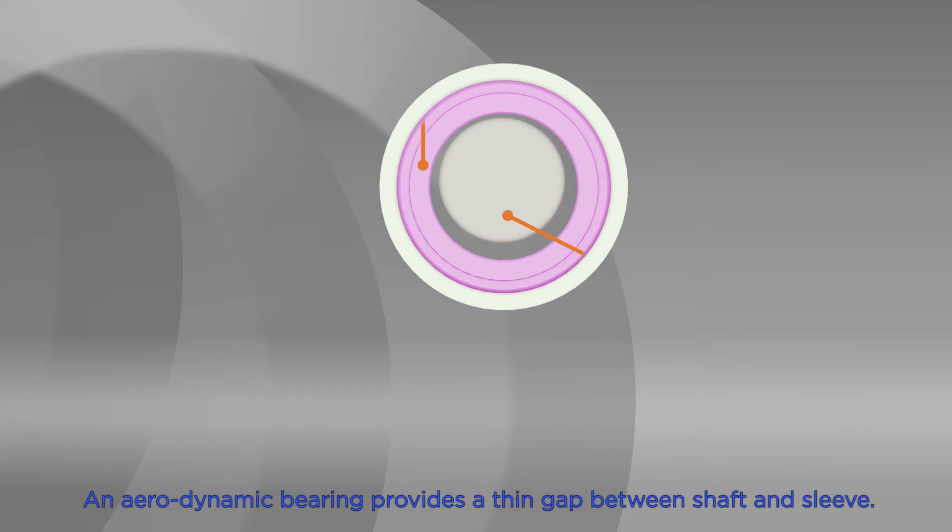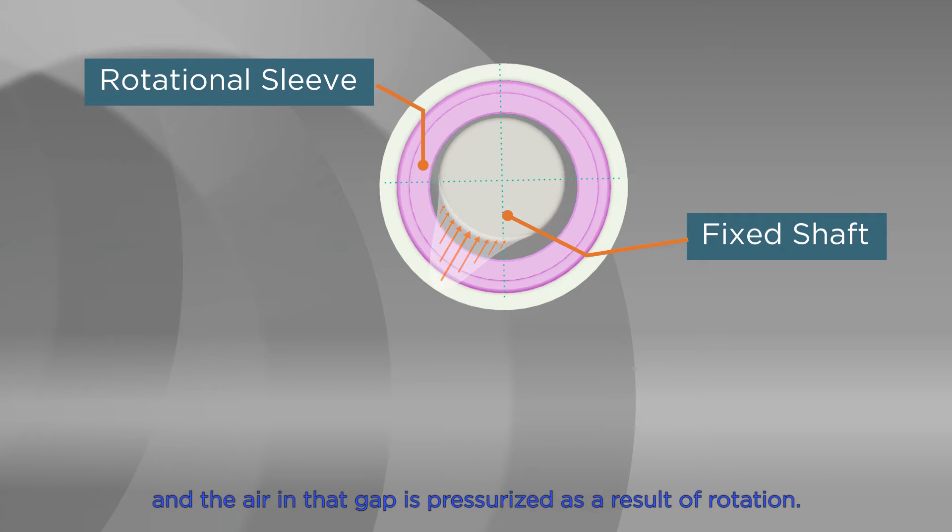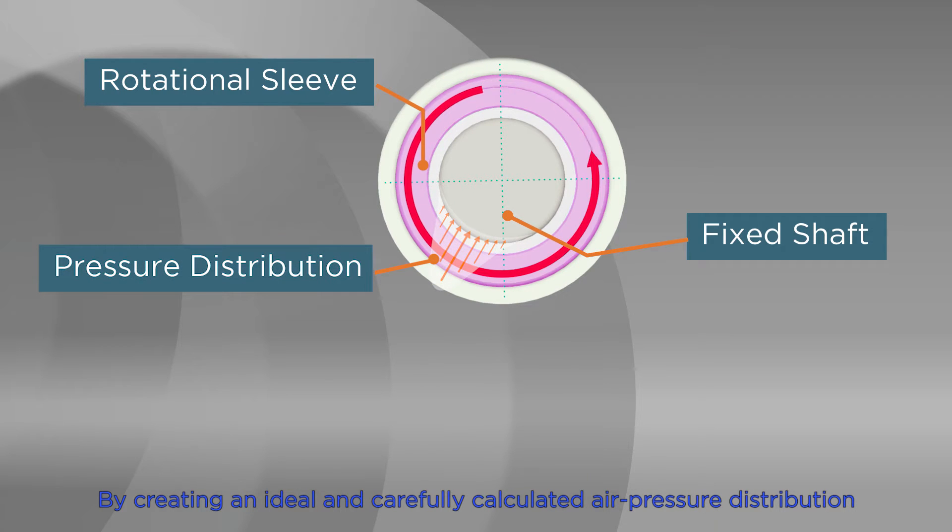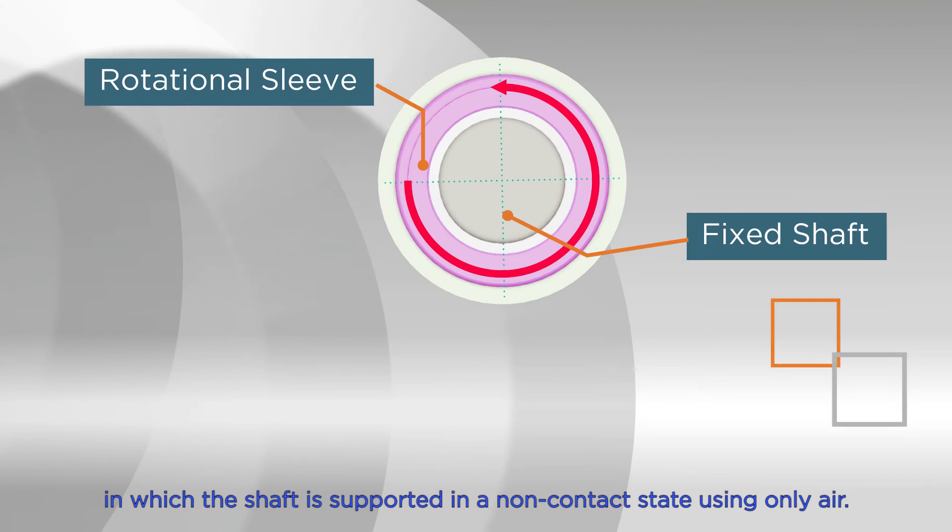An aerodynamic bearing provides a thin gap between shaft and sleeve, and the air in that gap is pressurized as a result of rotation. By creating an ideal and carefully calculated air pressure distribution by means of a truly innovative piece of technology, it is possible to maintain a constant pressure that is just enough to fix the shaft in place. It is a truly revolutionary technology in which the shaft is supported in a non-contact state using only air.